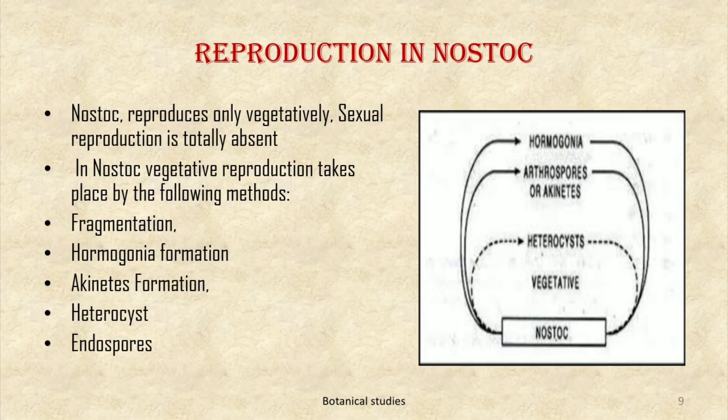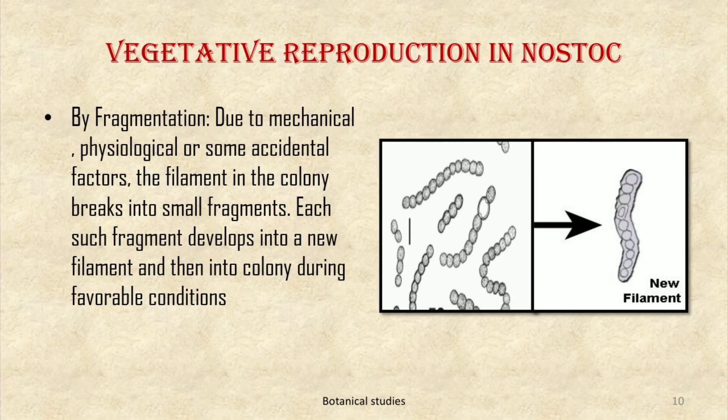Reproduction in Nostoc: Nostoc reproduces only vegetatively. Sexual reproduction is totally absent in Nostoc. Vegetative reproduction takes place by the following methods: fragmentation, hormogonia formation, akinete formation, heterocyst, and endospore formation.